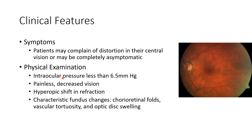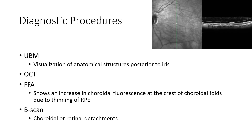The clinical features of hypotony maculopathy — patients may complain of distortion in their central vision or may be completely asymptomatic. Examination findings include IOP less than 6.5 mmHg, painless decreased vision, hyperopic shift in refraction, and fundus changes like choreoretinal folds, vascular tortuosity, and optic disc swelling. This picture shows a case of hypotonous maculopathy with choreoretinal folds.